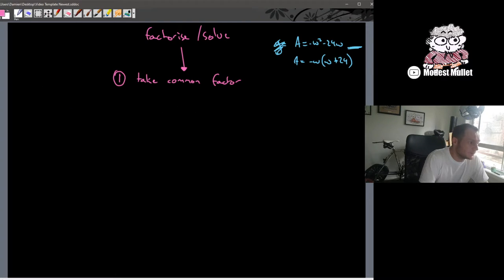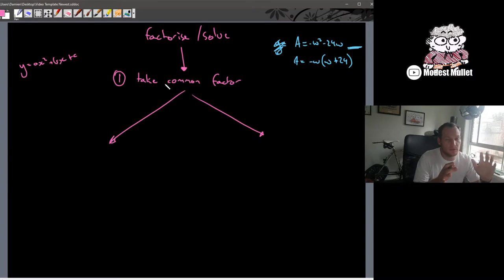From there we split into two different branches. When we're in polynomial form we have y equals ax squared plus bx plus c. That's our standard polynomial form. Whatever the number in front of the x squared is is a, whatever's in front of the x is b, whatever's the constant at the end we call it c. The two forks depend on if a is equal to 1 or if a is not equal to 1.